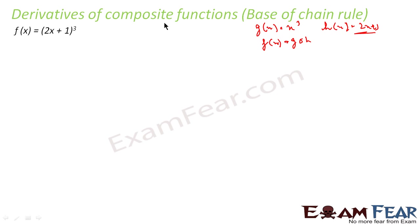Sometimes composite functions are really complex and we are asked to find the derivative of them — that's what we use chain rule for. Before introducing the chain rule, let me give you the motivation for why we need it. So f(x) = (2x+1)³ is one example of a composite function composed of two functions: h(x) = 2x+1 and g(x) = x³, so f(x) = g of h(x), and I want to find the derivative.